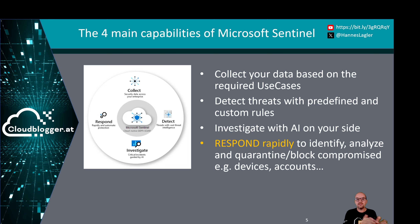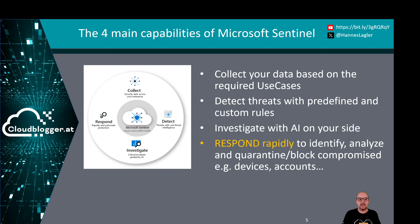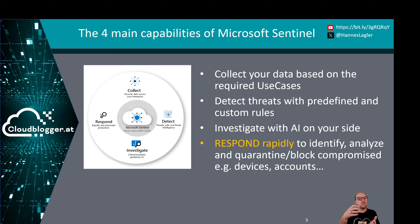Then investigate — use artificial intelligence. Microsoft Sentinel has AI integrated to help you detect and investigate faster. You can also use Microsoft Security Copilot as new functionality to investigate what happens in your environment. And at the end, respond rapidly. When something happens, you have to respond rapidly to identify, analyze, and quarantine or block compromised users, devices, or whatever. If you respond rapidly, the attacker doesn't get a chance to access other systems.